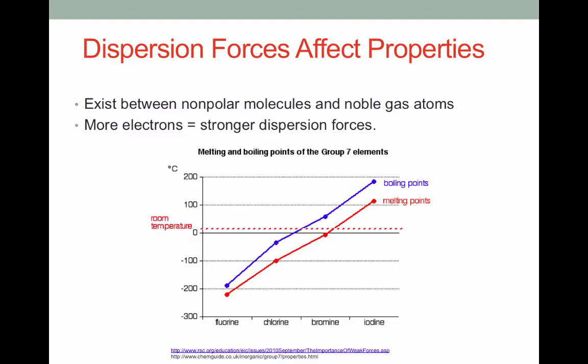Notice that room temperature is indicated by the dotted red line. Fluorine and chlorine have melting and boiling points well below room temperature, so they are gases at room temperature. However, bromine has a melting point below room temperature and a boiling point above, so it exists as a liquid at room temperature. Iodine, the largest of these molecules with the most electrons, has a comparatively higher melting and boiling point, and as you may know, is a solid at room temperature.